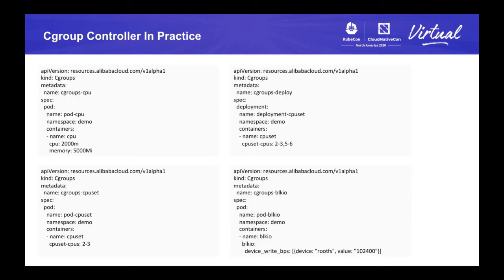Next, let's look at some examples. The first one is to set CPU and memory for one pod named pod-cpu. We configure the container name belonging to the pod, and we can configure CPU and memory limitations at the same time. The second and third examples involve setting the CPU set and blkio for a block device. We can set the device read or write BPS or device read or write IOPS for one device. As mentioned before, the target device can be defined as rootFS, volumes, or device ID on the target node — in this example, we set it to rootFS.